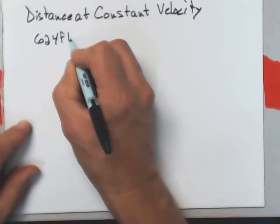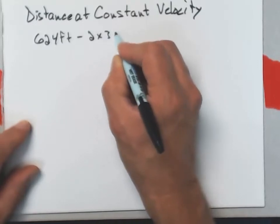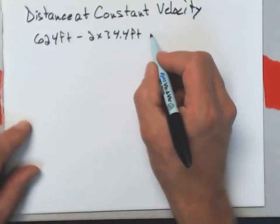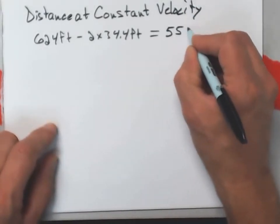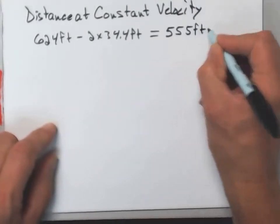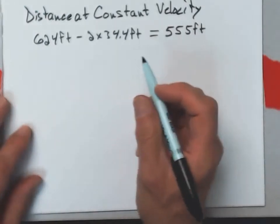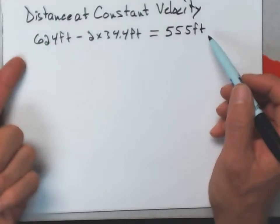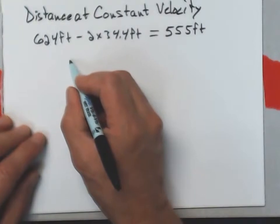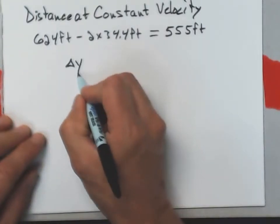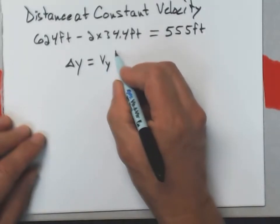624 feet minus 2 times 34.4 feet, I get 555 feet for that distance that it has to travel. Well, now I can just use this. I have a stretch where it's moving at constant velocity in the y direction. I can just say delta y is going to equal v sub y times t.